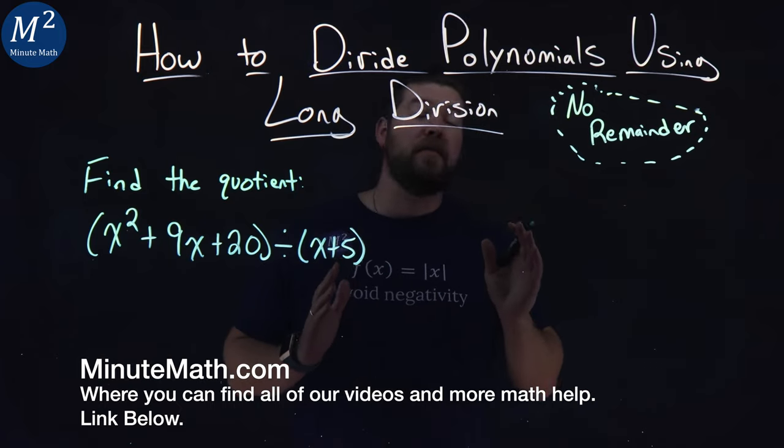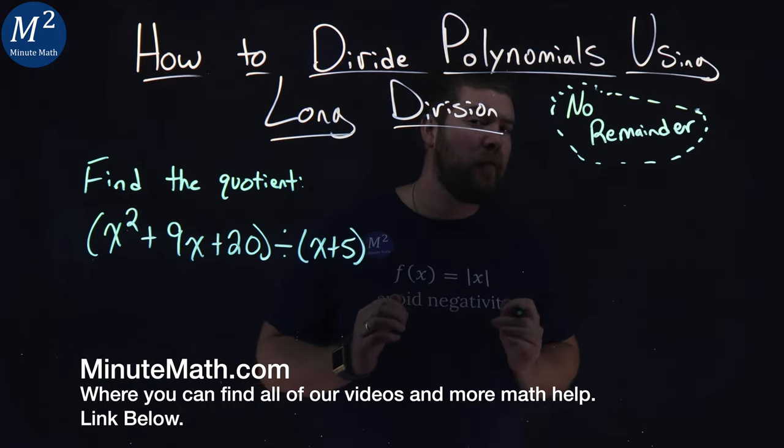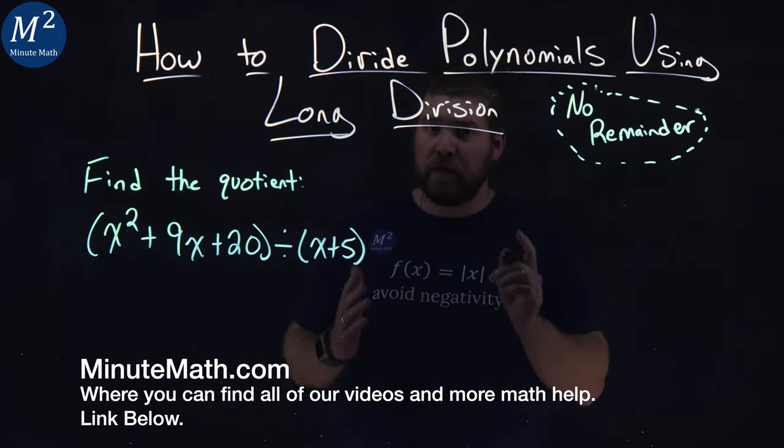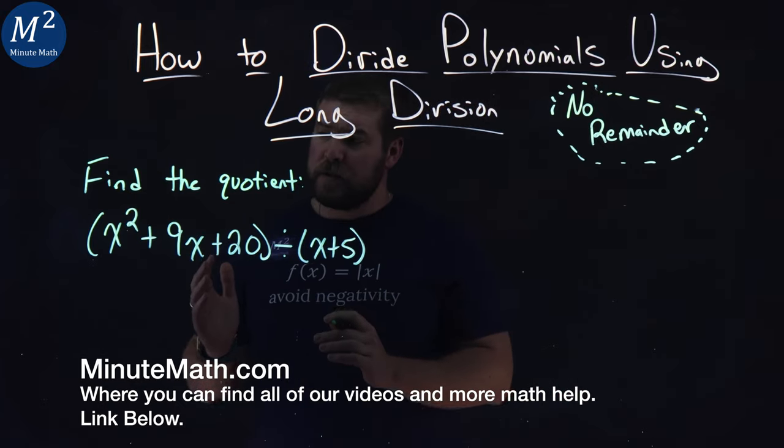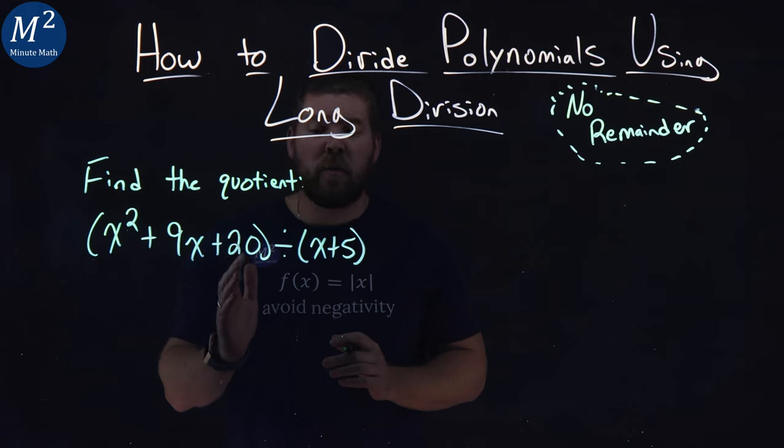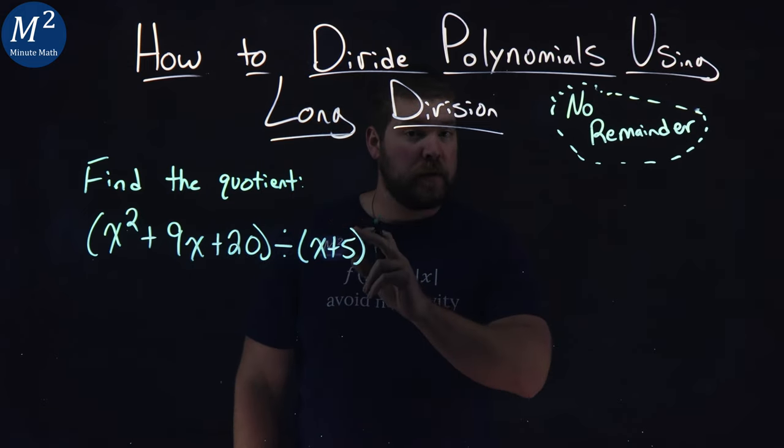Now, I'm going to tell you from the beginning, this example won't have a remainder. We'll have a next video that does. But here we have a problem. We want to find the quotient: x squared plus 9x plus 20 divided by x plus 5.